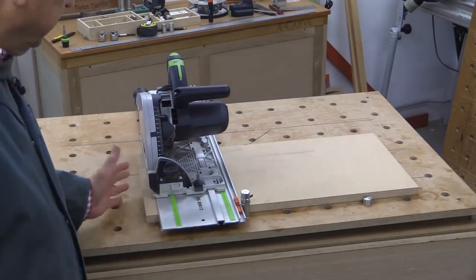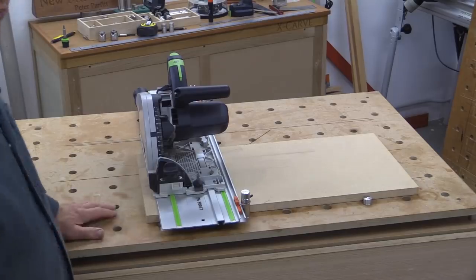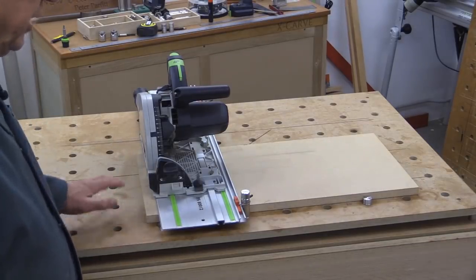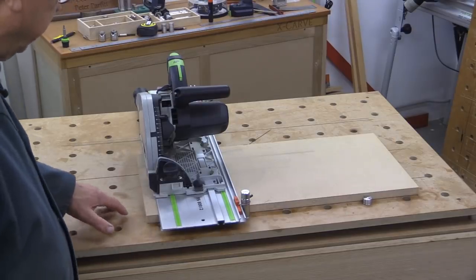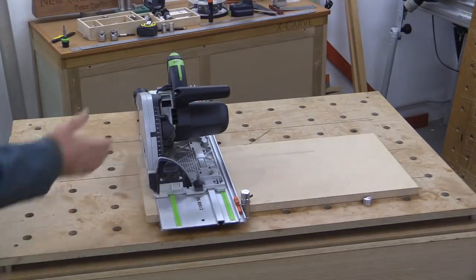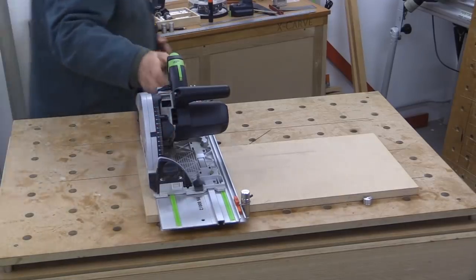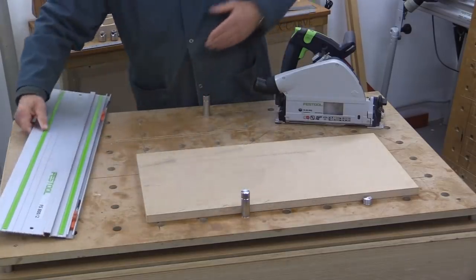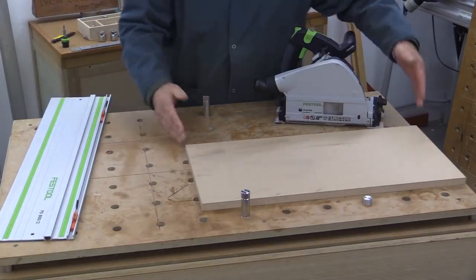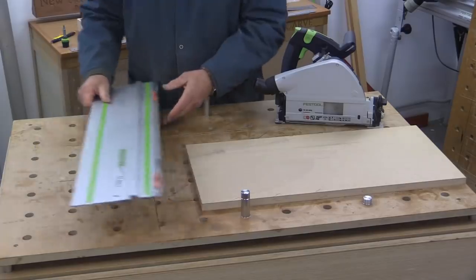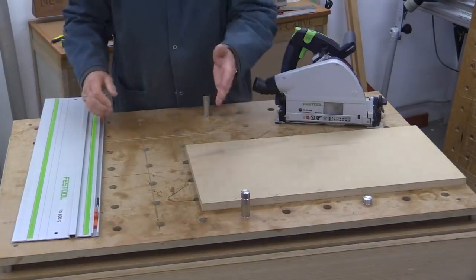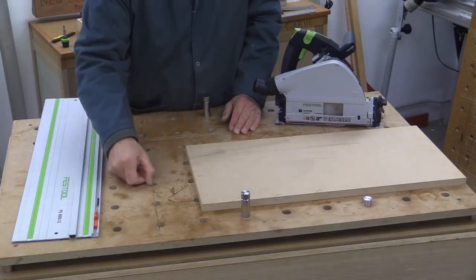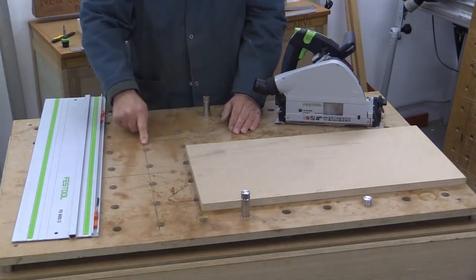Here I have a relatively recently produced top, and it's already getting beaten up, I'm afraid. This top was created as a direct replacement to go on the MFT3. It doesn't have offset holes. If I take the saw away and also the guide rail, and then move this piece of wood, you can see that in the normal position that the guide rail would go with these Parf Superdogs, then you're going to get a kerf line here which goes straight through that column of holes.